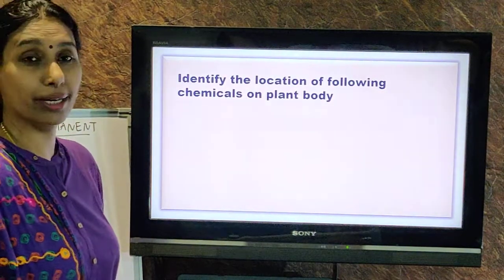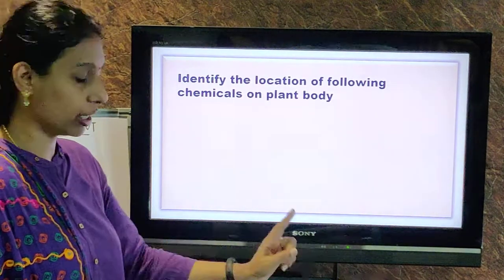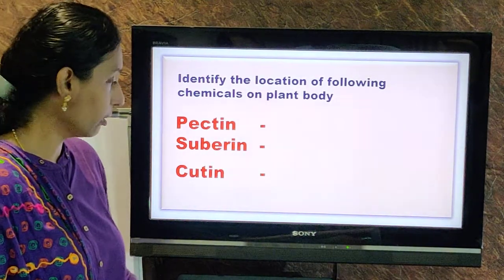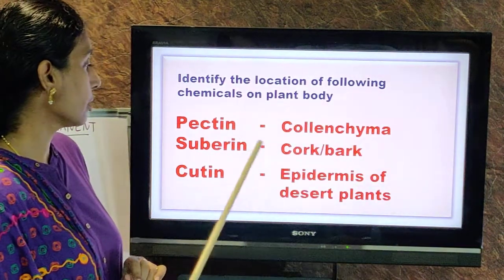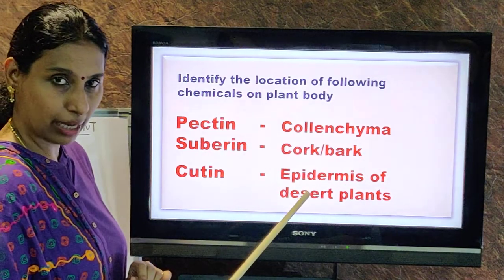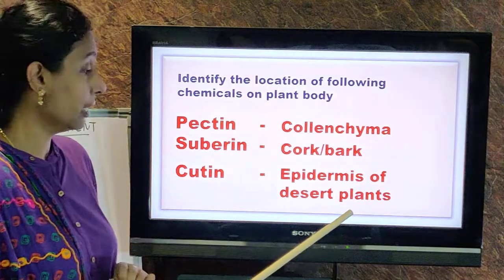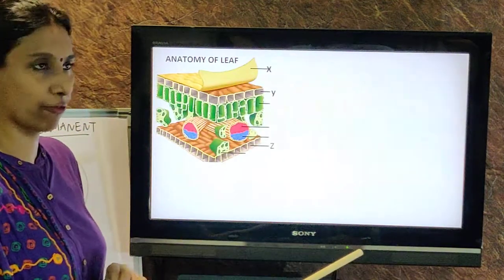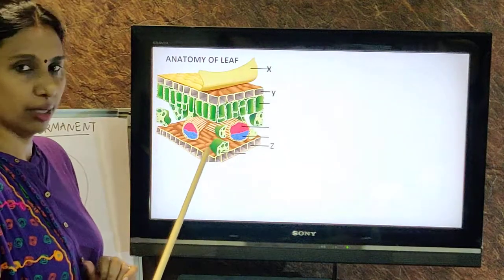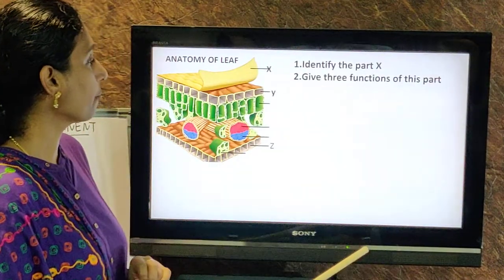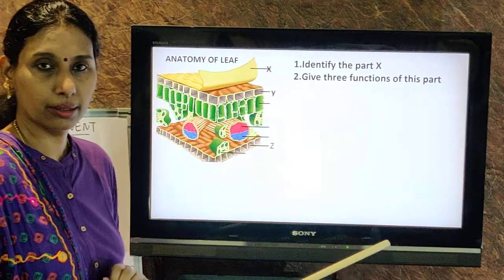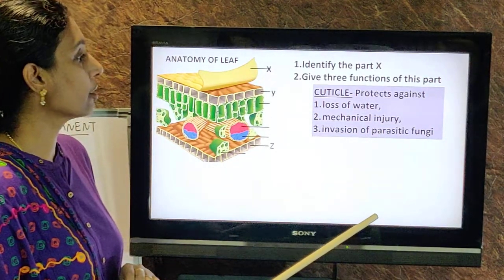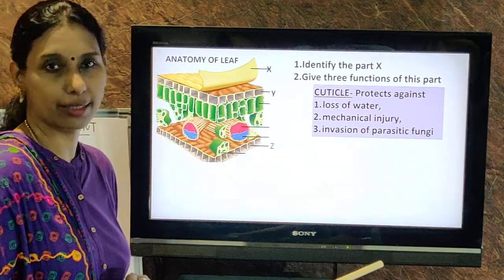Next question: identify the location of the following chemicals — pectin, suberin, and cutin. Pectin is found in colenchyma. Suberin is found in the cork or bark. Cutin is present in the epidermis of desert plants. Now, identify part X in the anatomy of the leaf and give three functions. Part X is cuticle. Its functions: it protects against loss of water, mechanical injury, and invasion of parasitic fungi.